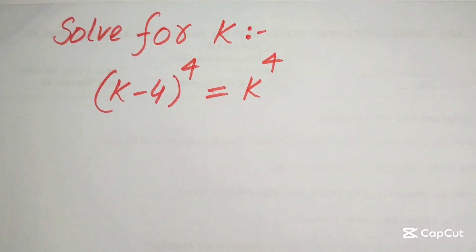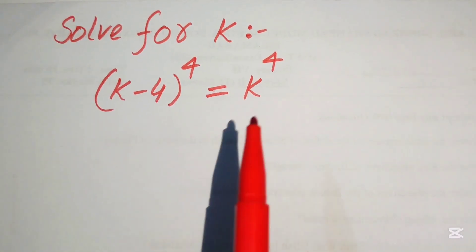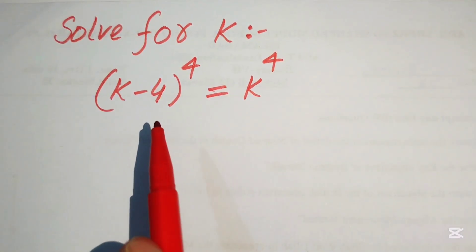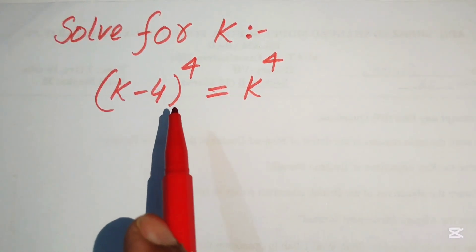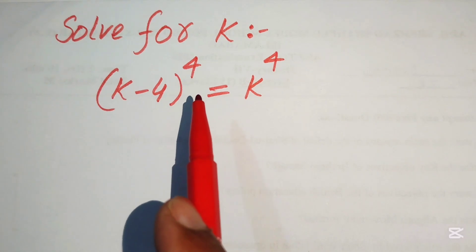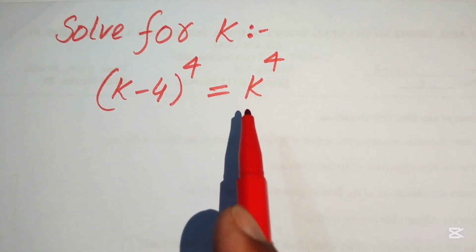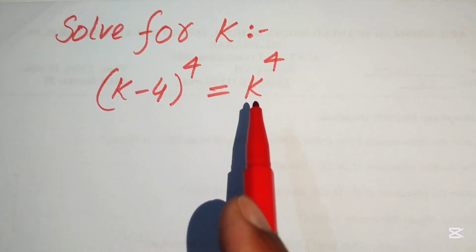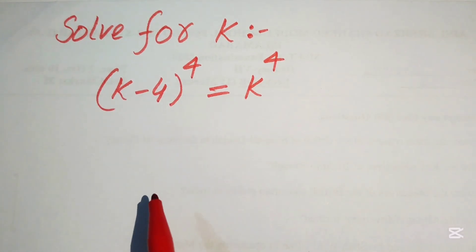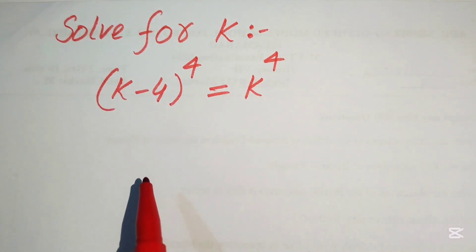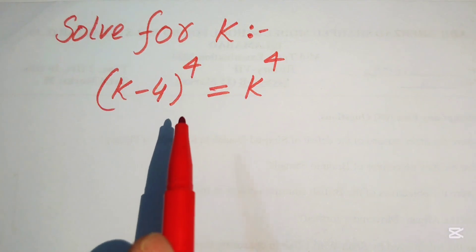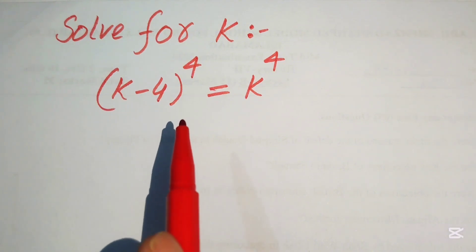Hello everyone, welcome. We solve this nice algebra problem: (k − 4) to the power of 4 equals k to the power of 4, and we solve this problem for the values of k.